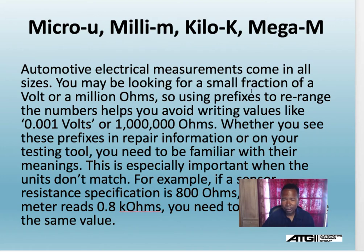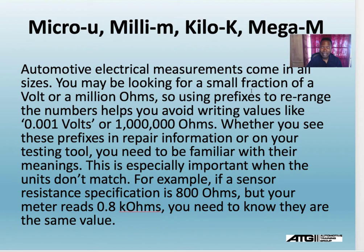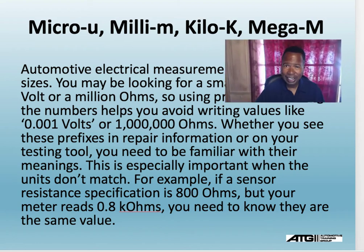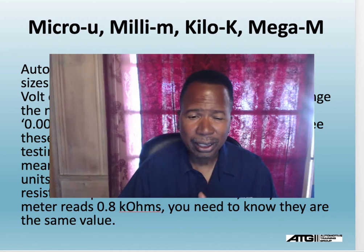This is especially important when the units don't match. For example, if a sensor resistance specification is 800 ohms, but your meter reads 0.8K ohms, remember the K is abbreviation. It's in the thousand place, so you have to move the decimal three places from where it sits to the right. You need to know that they are the same value.